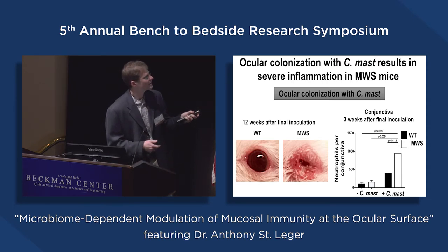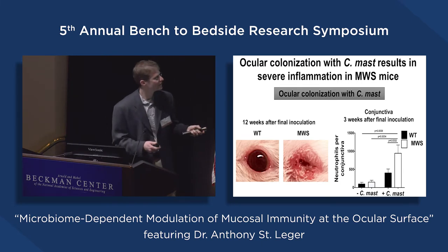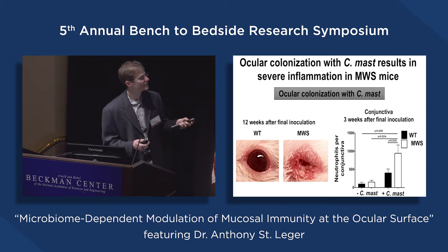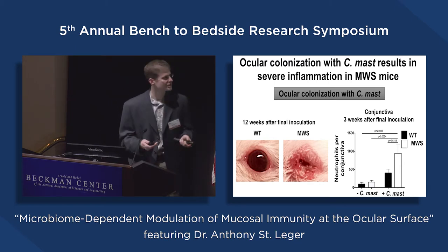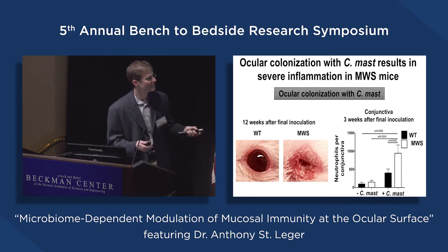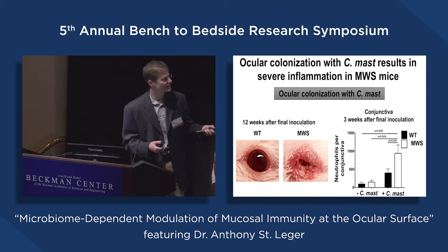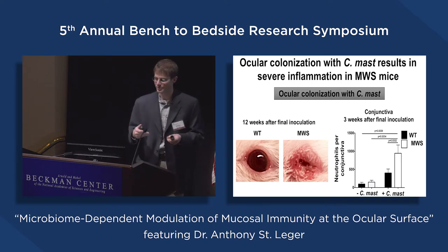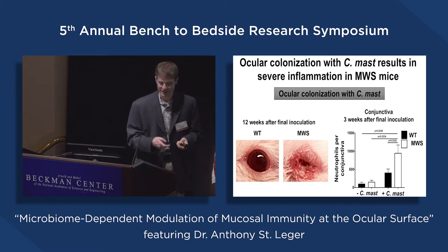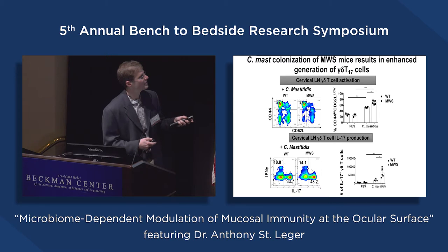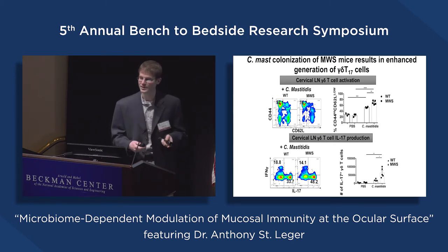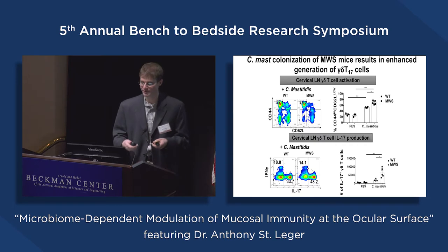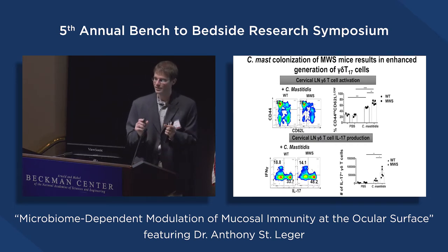If we inoculate wild-type mice and Muckle-Wells mice with Corynebacterium mastiditis, a fraction of them start to develop a really severe conjunctival phenotype. Three weeks after the final inoculation, comparing neutrophil numbers in the conjunctiva, without C-mast there's really no difference, but adding C-mast causes a slight increase in neutrophils in wild-type mice and a significant increase in Muckle-Wells mice — suggesting C-mast can cause this phenotype. We also see significantly increased gamma delta T cell activation in the draining lymph nodes and an increase in IL-17, supporting our hypothesis that these gamma delta T cells are overactive.